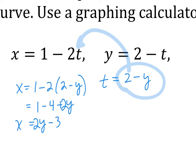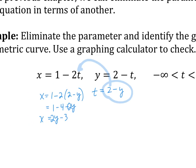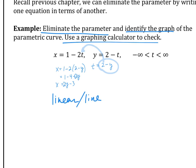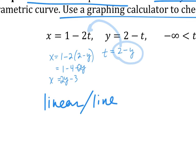So this is one way. What kind of shape is this going to be? Linear — it's just a line. And you can rewrite it as y equals something in x. The question says eliminate the parameter — we did that. Identify the graph — this is a linear or line. And use a graphing calculator to check, which you can do on your own time.